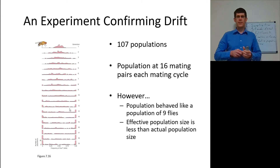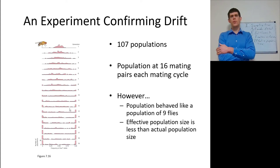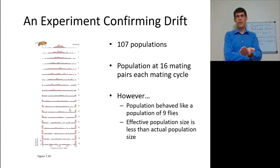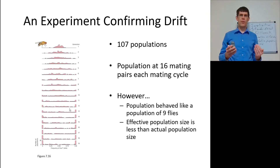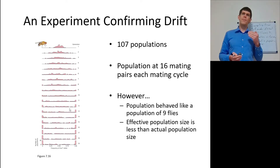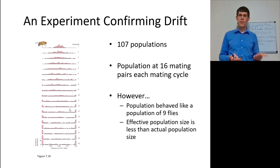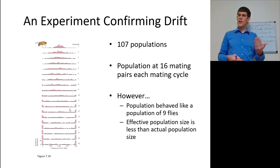The effective population size is less than the actual population size — it is how the population actually behaves. Northern elephant seals are polygynous with harems, so one male mates with many females while many males go without a mate. Thus the effective population size is smaller than the actual population size because some males mate more frequently and some individuals don't mate at all. The effective population size is really the number of breeding individuals.